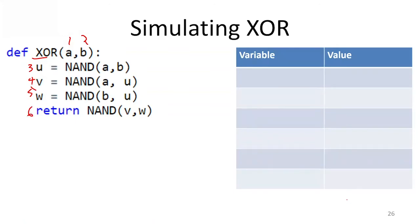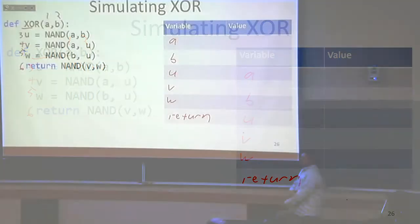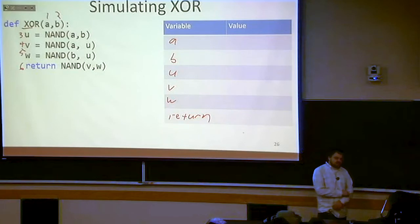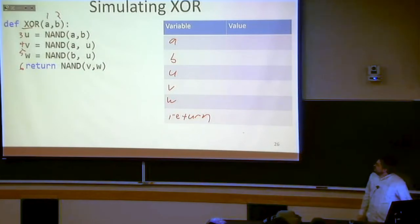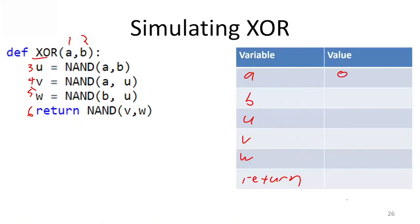What are our variables? We have A, B, U, V, W, and return. As we execute our program, we're going to assign each of these variables the value that it needs. For instance, if I run this input on, let's say, 0, 1, we start out with A and B being defined because those were my input variables.